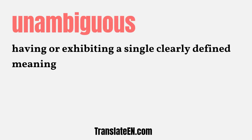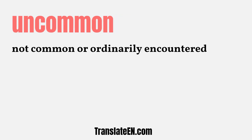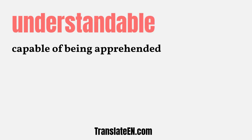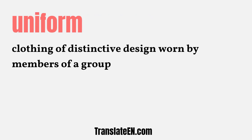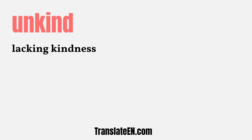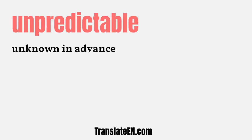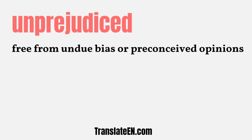Unambiguous: having or exhibiting a single clearly defined meaning. Uncommon: not common or ordinarily encountered. Understandable: capable of being apprehended. Uniform: clothing of distinctive design worn by members of a group. Unkind: lacking kindness. Unpredictable: unknown in advance. Unprejudiced: free from undue bias or preconceived opinions.